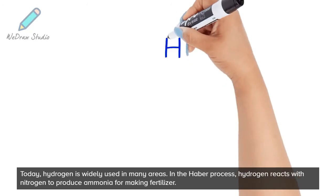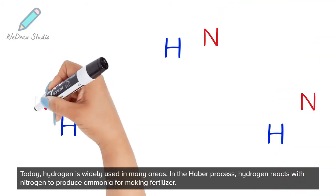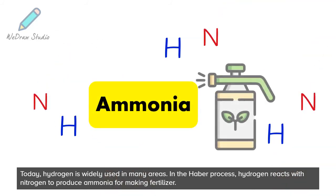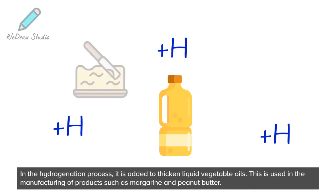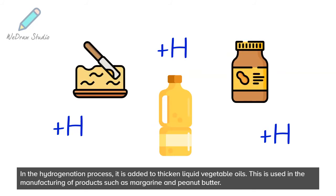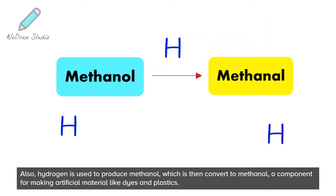Today, hydrogen is widely used in many areas. In the Haber process, hydrogen reacts with nitrogen to produce ammonia for making fertilizer. In the hydrogenation process, it is added to thicken liquid vegetable oils. This is used in the manufacturing of products such as margarine and peanut butter. Also, hydrogen is used to produce methanol, a component for making artificial materials like dyes and plastics.